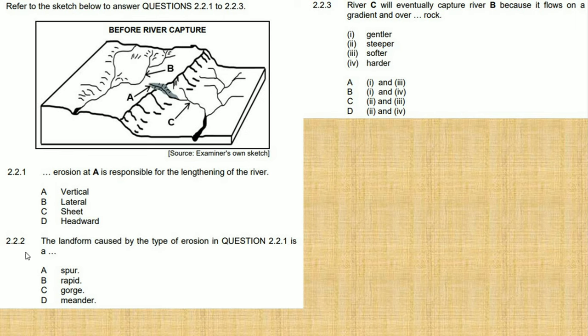And then 2.2.2: the landform caused by this type of erosion in question 2.2.1 is... Remember I said this river, river A, will erode this and will form a waterfall.